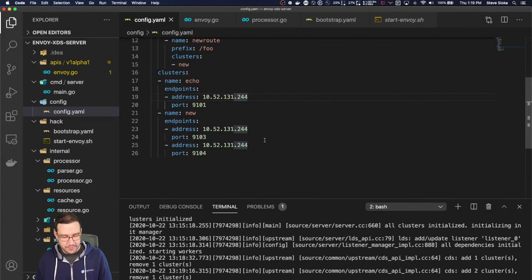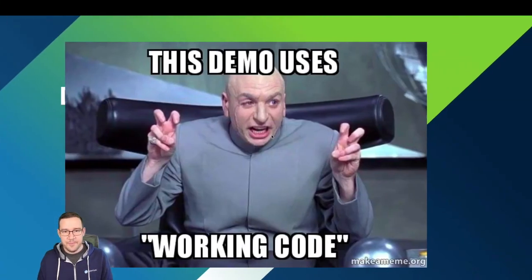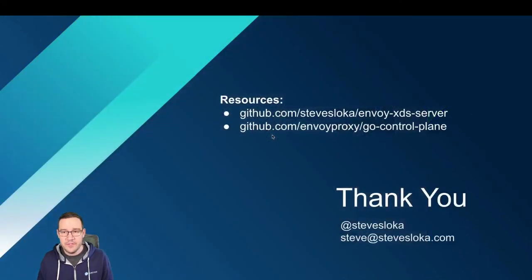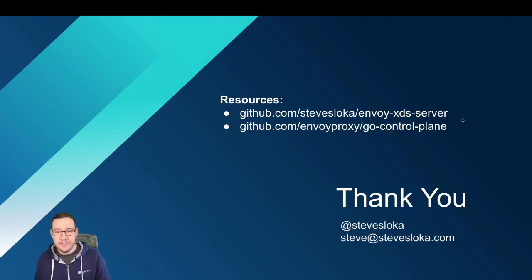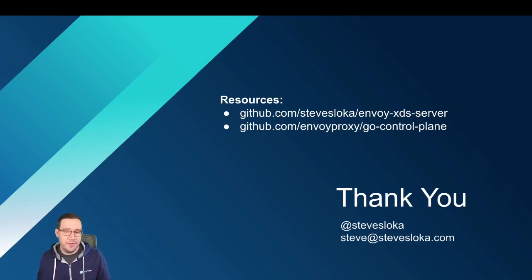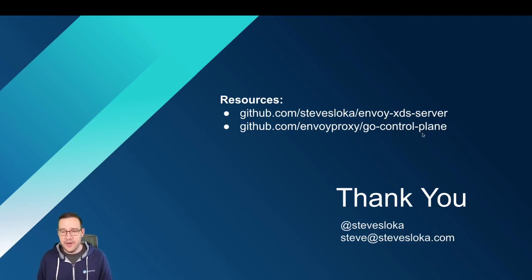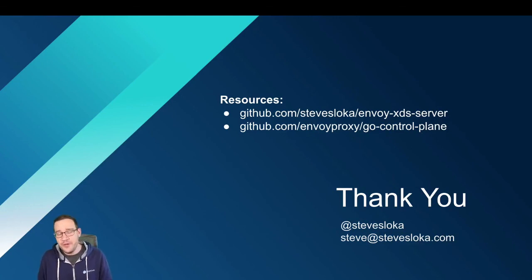That's all we have. If you're interested in learning more, there are some resources here. The top resource is the sample XDS server I wrote, which drives from the Go Control Plane example but adds YAML parsing. The Go Control Plane project is another resource, and obviously envoyproxy.io. I'm Steve Sloka — please reach out with questions, I'm happy to discuss more. Hopefully you've got a good understanding of how Envoy works and how you can build your own management server. Thank you.